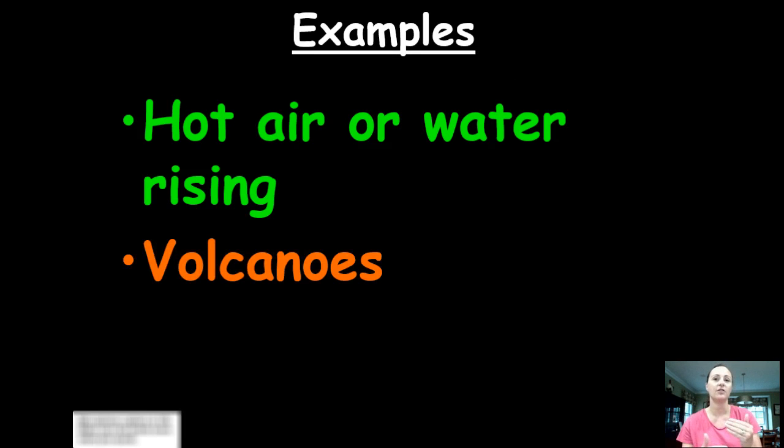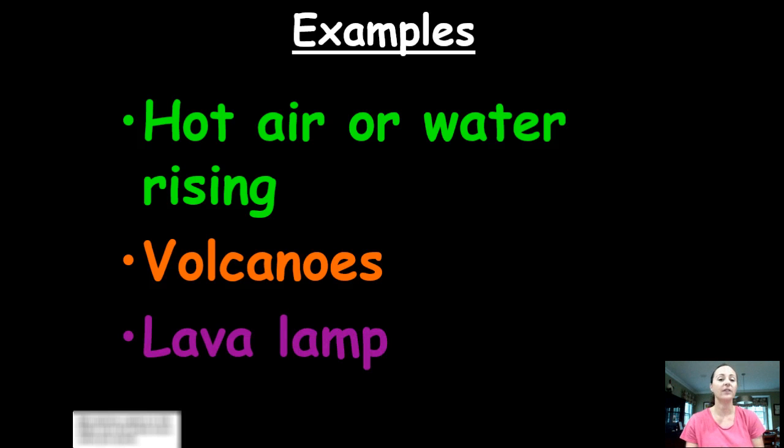For example, we have hot air or we have water rising, and that is because of the change in density of the air or the water. Volcanoes and lava lamps are actual examples of convection, and if we look at this diagram, you see the lava lamp.